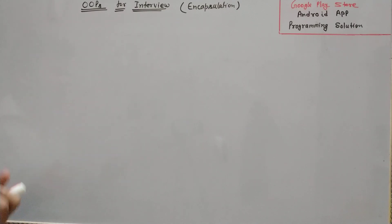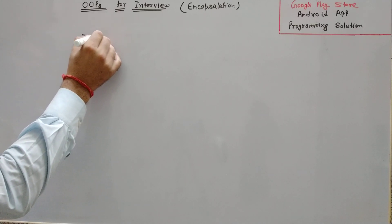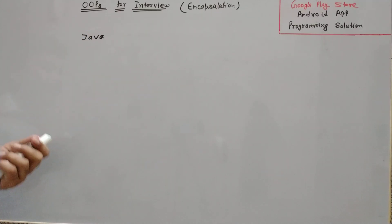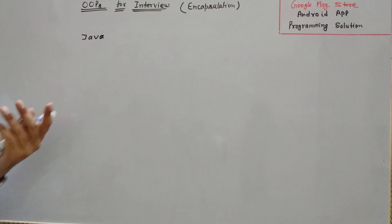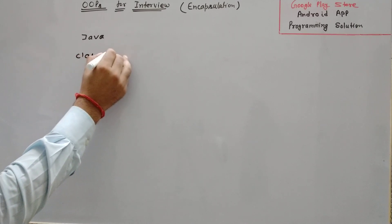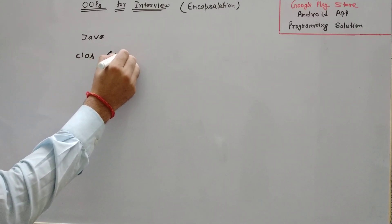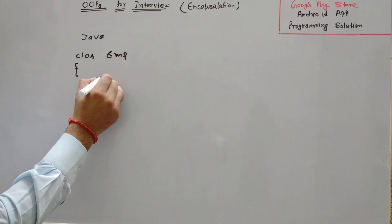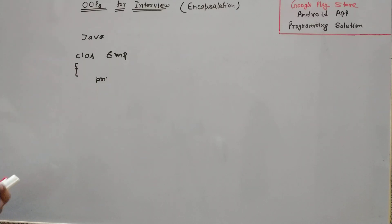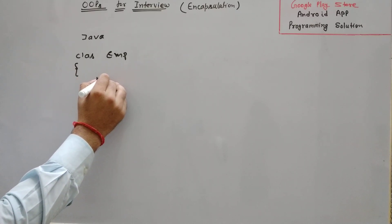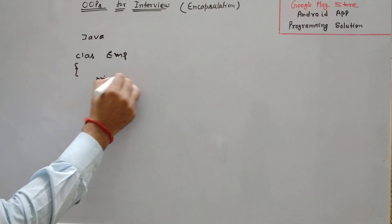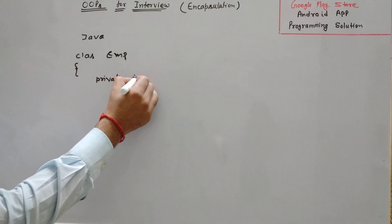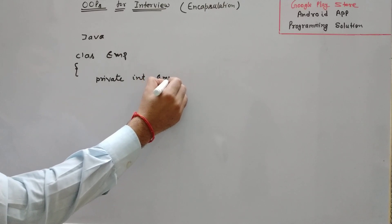In Java or C++, you can define any programming language. Let's take an example of a Java class, and after that we will take an example of a C++ class. Encapsulation is essentially the same for Java as well as C++. There is a class — let's say class Employee (EMP) — and it has some members, which may be private or public. Let's assume there is a private integer employeeID.